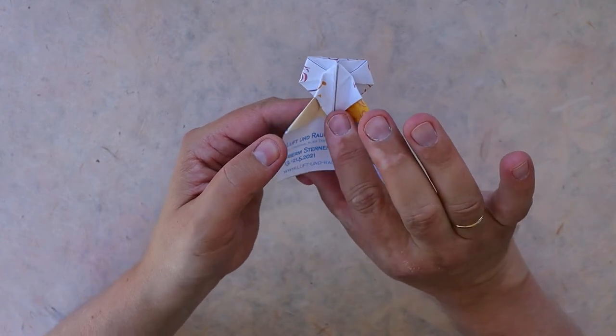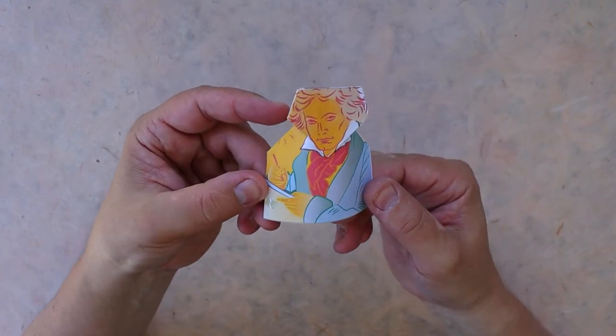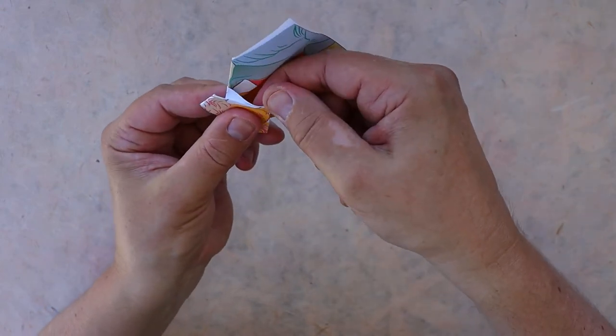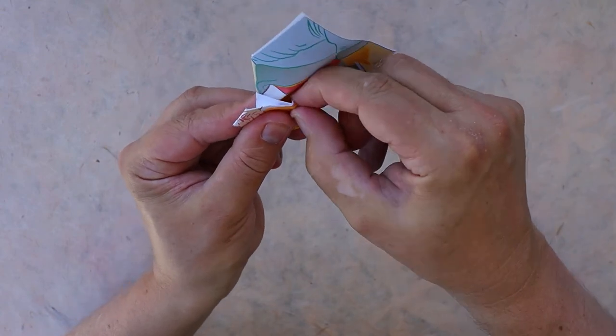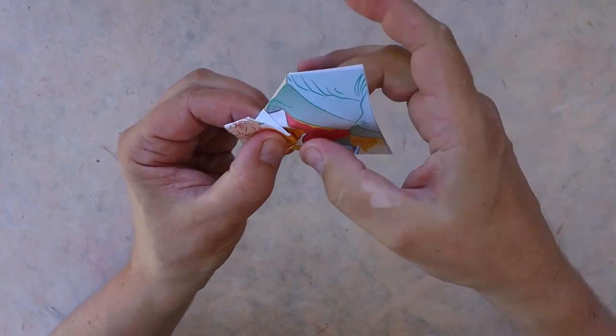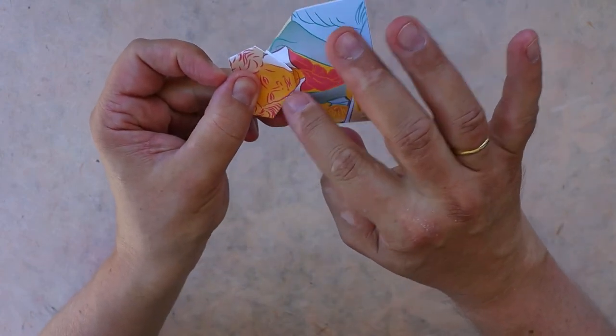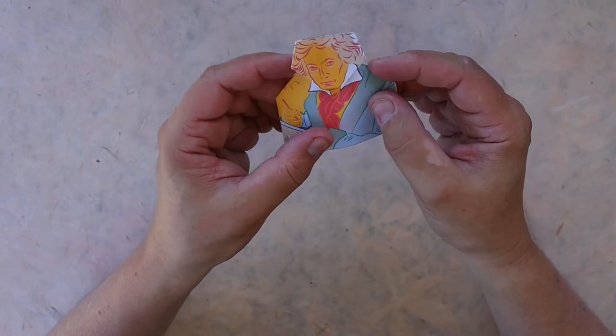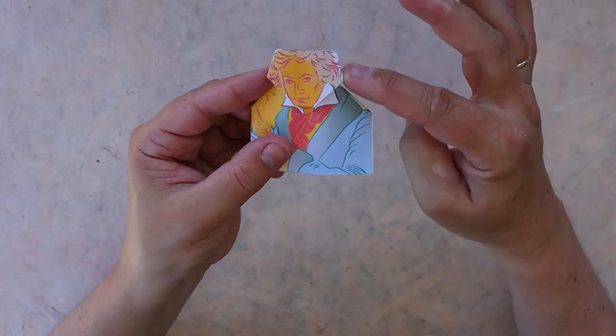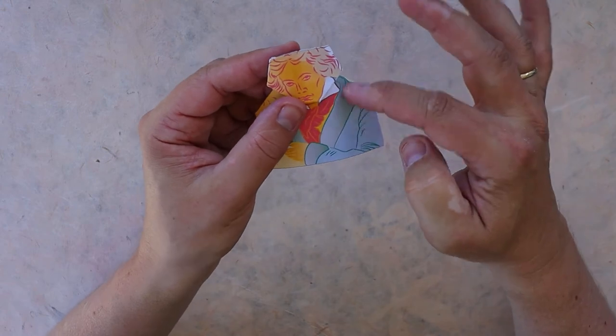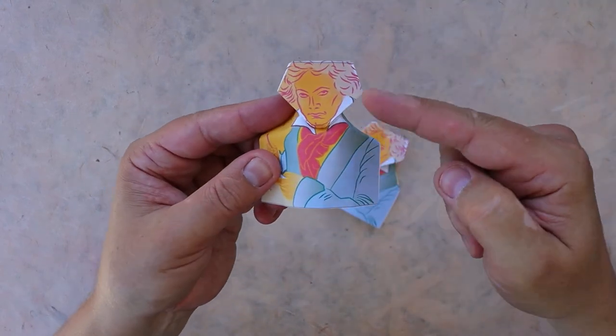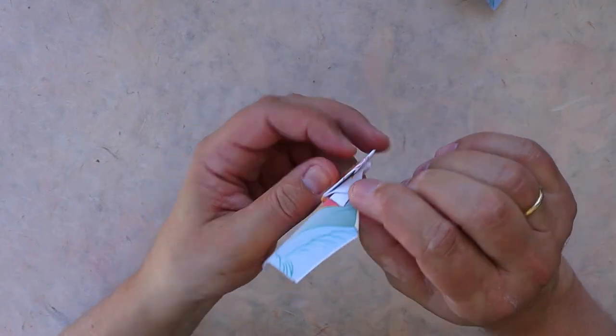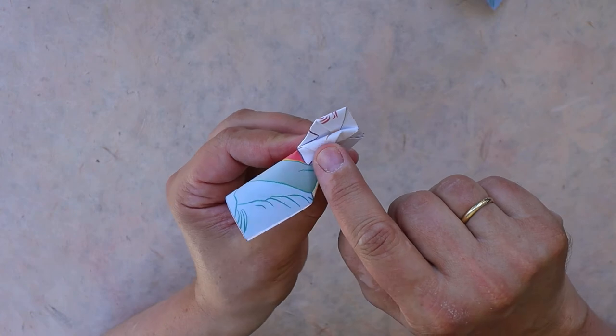And now turn the paper around. You see the model is almost done. Just fold the chin under so that you have a nicer shape for the face now. Because you want to have a more elegant shape here, we bring in two curved folds, and that's why we pre-creased.